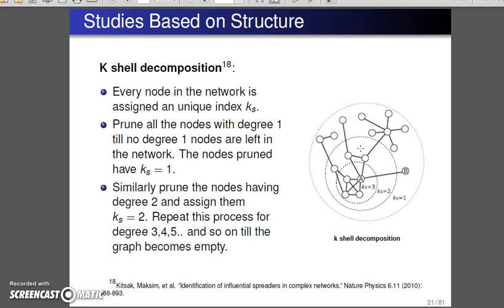Based on this technique, Kitsak derived two kinds of shells which is core shells and periphery shells, and he discovered that the core shells are the ones which are the influential spreaders in a complex network.